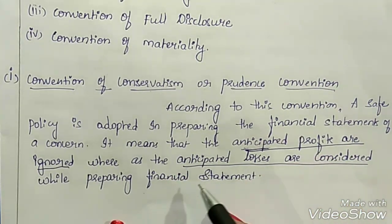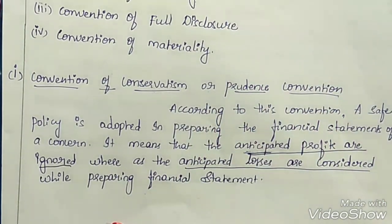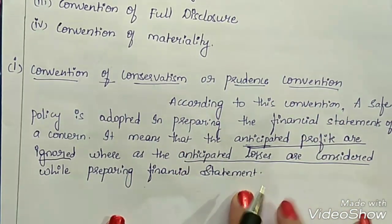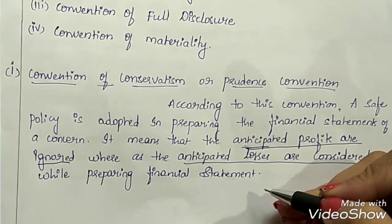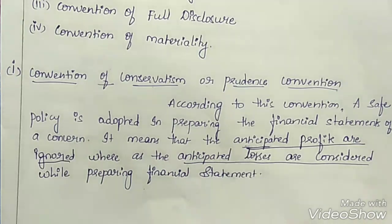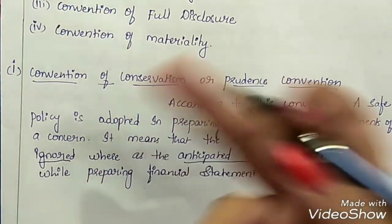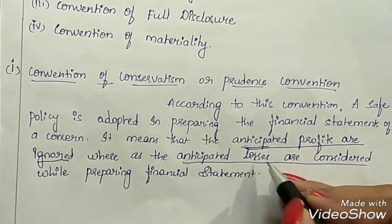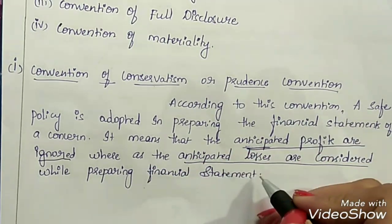But if losses arise, the business has to be ready to face them. Hence we need to anticipate all possible losses while preparing the financial statements like profit and loss account and balance sheet. We consider bad debts, or we make certain provisions and reserves for bad debts, because if bad debts arise — that is, a loss arises — we have to be ready to face it.